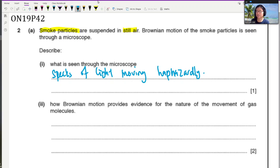How Brownian motion, second part, provides evidence for the nature of the movement of gas molecules. So the smoke particles will collide with the gas molecules causing the smoke particle to change direction. That's why you see that haphazard motion or random motion. I guess you could also put random motion. So I will write that out in the sentence first.